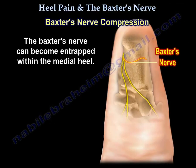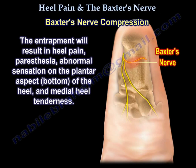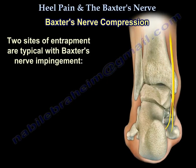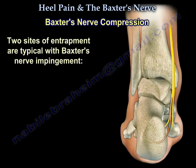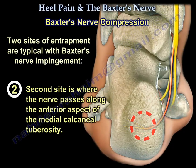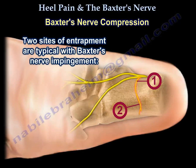The Baxter's nerve can become entrapped within the medial heel. The entrapment will result in heel pain, paresthesia, abnormal sensation on the plantar aspect — the bottom of the heel — and medial heel tenderness. Two sites of entrapment are typical with Baxter's nerve impingement. The first site is located between the fascia of the abductor hallucis and the quadratus plantae muscle. The second site is where the nerve passes along the anterior aspect of the medial calcaneal tuberosity. On this diagram, you can see the typical two sites of entrapment of the Baxter's nerve.